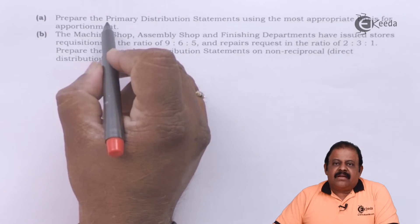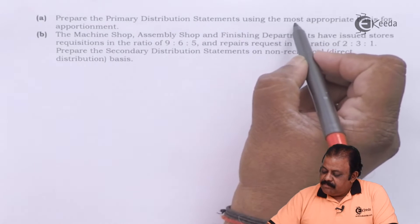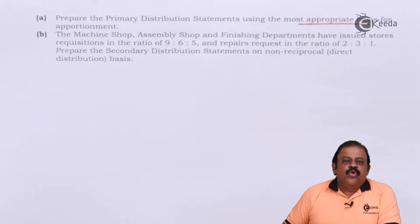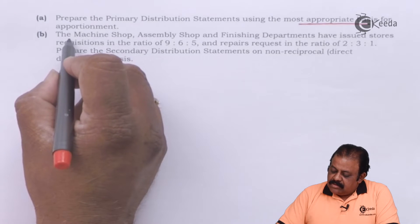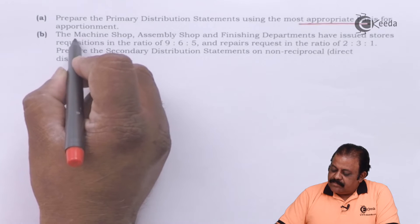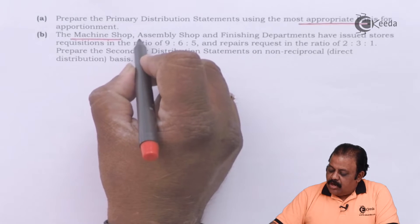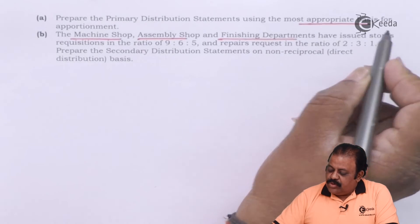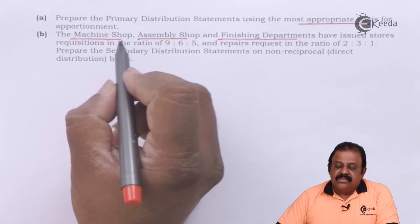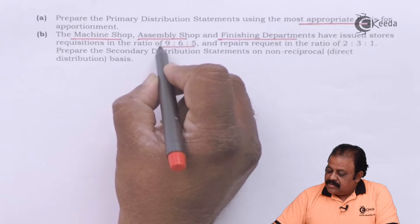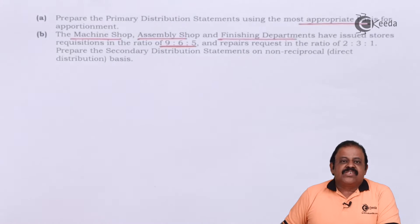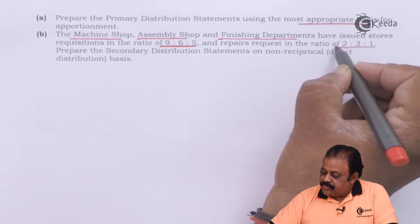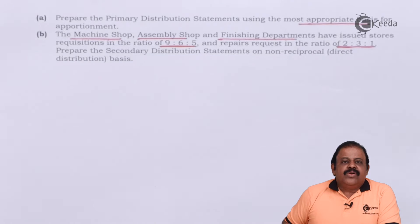We are required to prepare the primary distribution statement using the most appropriate basis for apportionment. The machine shop, assembly shop, and finishing departments have issued store requisitions in the ratio of 9:6:5, and repair requests in the ratio of 2:3:1.